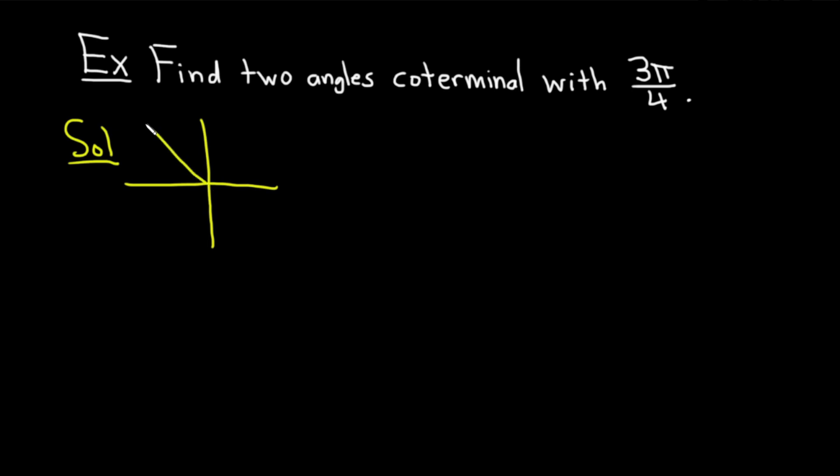Here's 3 pi over 4, right here. Let me just show you what they are. To find a coterminal angle, all you do is you add 2 pi, or subtract 2 pi. And you can do it as many times as you like, as long as you end up in the same place.